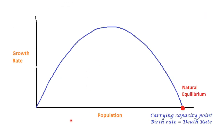If we plot the same data in terms of growth rate versus population, as population increases, growth rate also increases. But at a certain point when population keeps increasing, growth rate no longer increases — it goes down and reaches zero at the point called natural equilibrium or carrying capacity. At that point, birth rate equals death rate, so there is no net growth and the population is at its maximum.